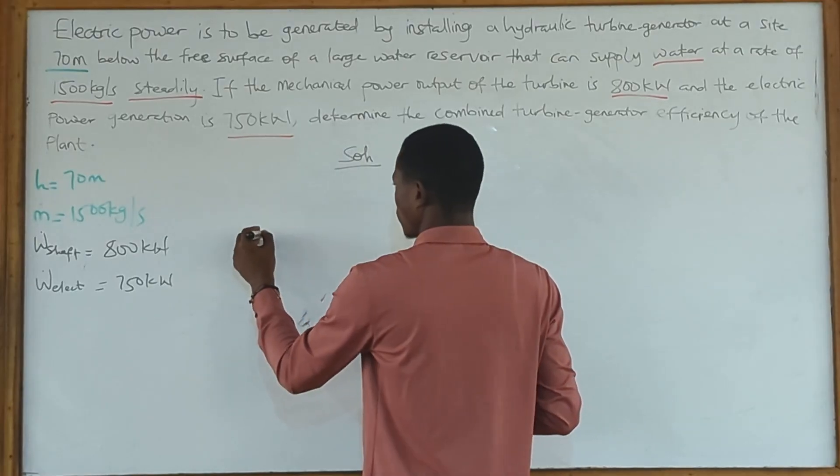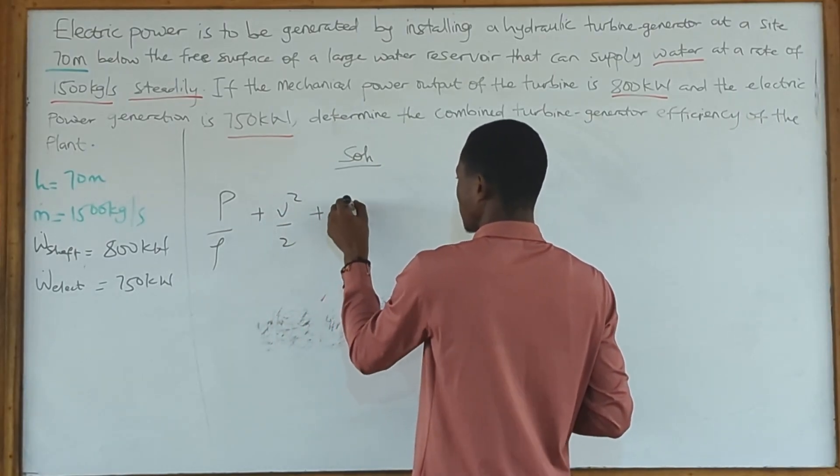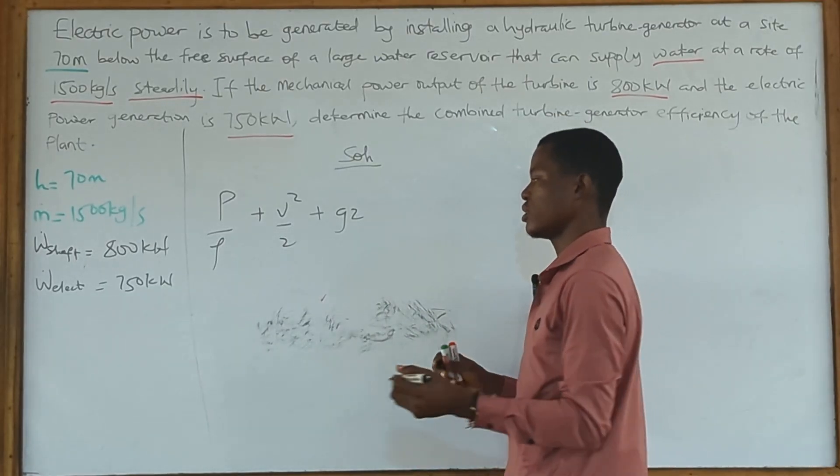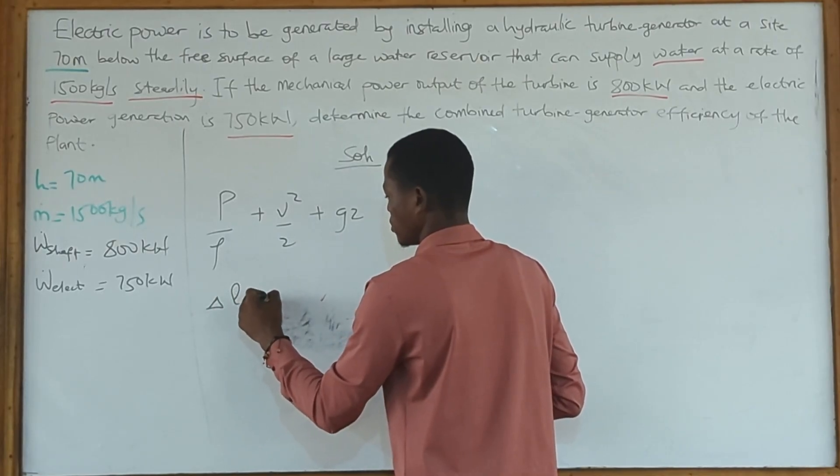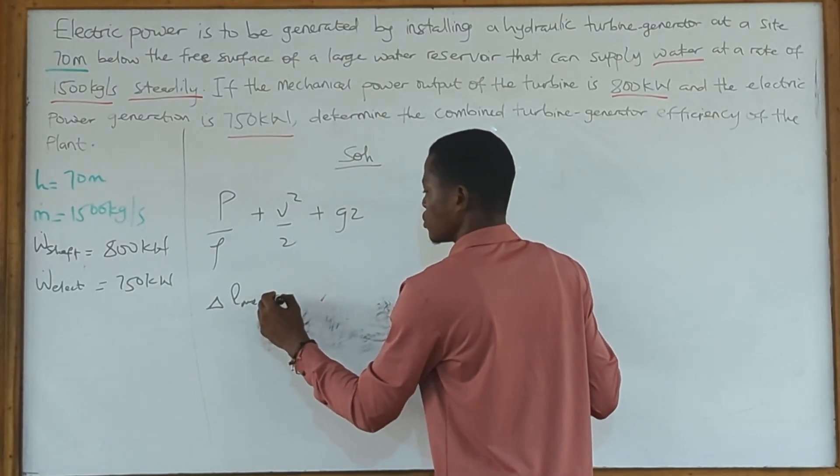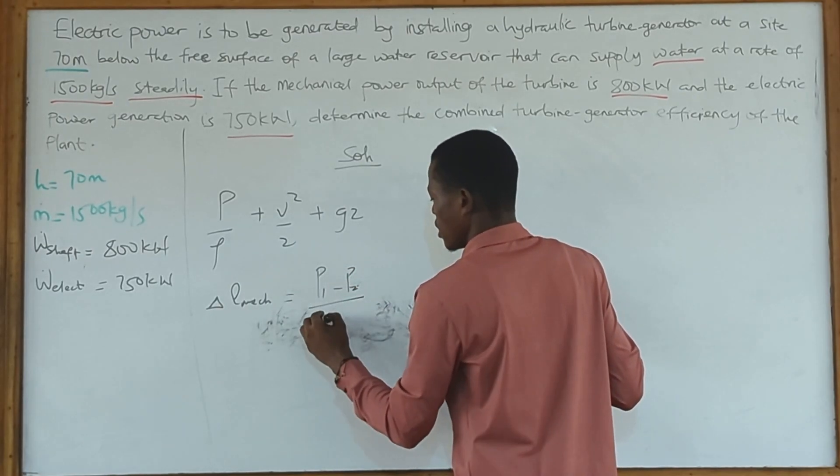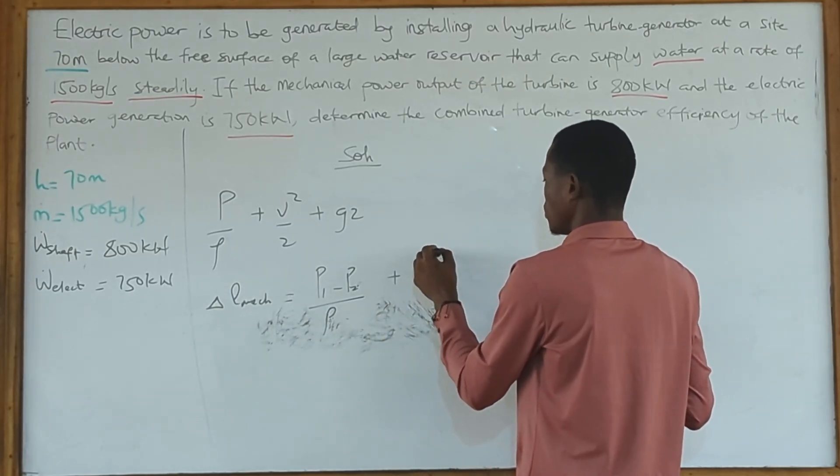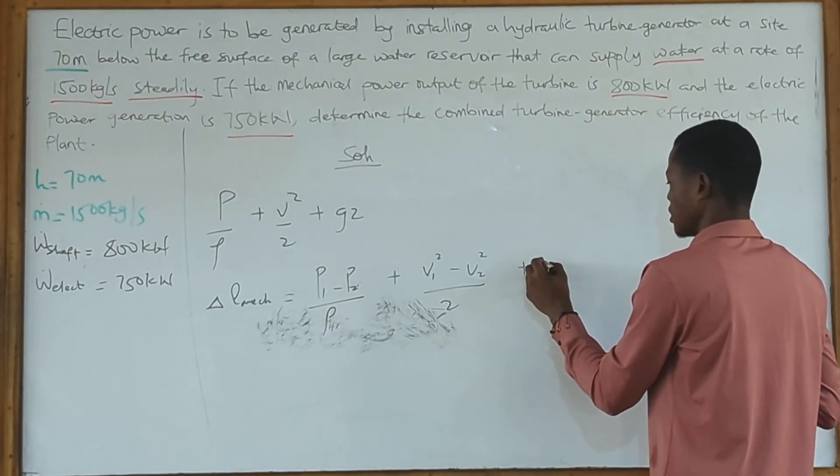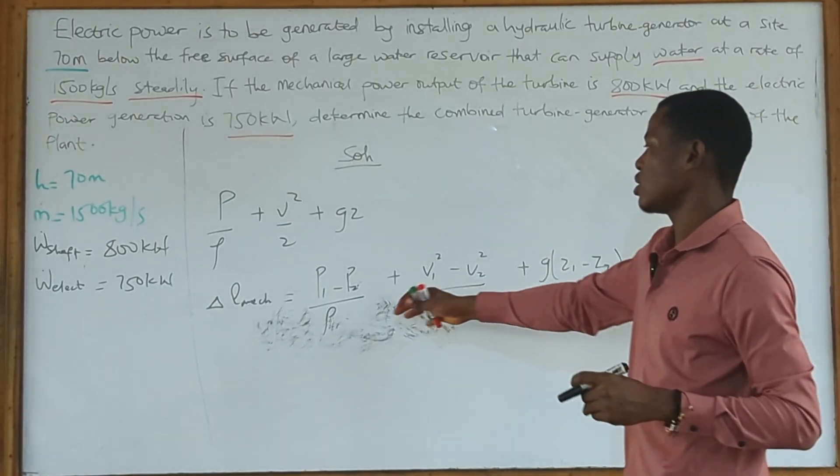Since we can use Bernoulli's equation to solve this, let's write it down. We have p/ρ + v²/2 + gz. For this question we want to find the change in mechanical energy. Using Bernoulli's equation, it gives us (p1-p2)/ρ + (v1²-v2²)/2 + g(z1-z2). To get all these parameters, let's first draw our free body diagram.